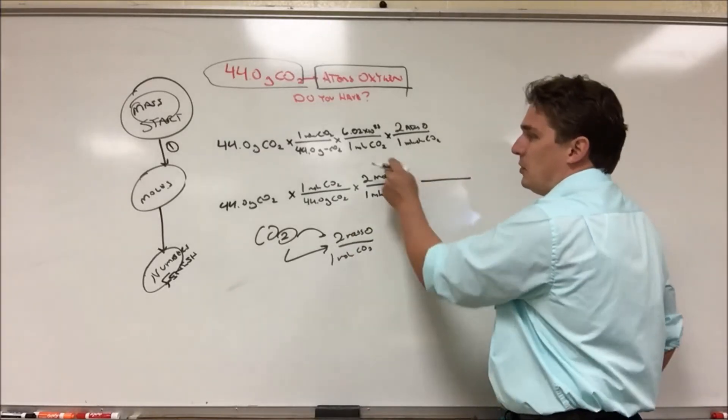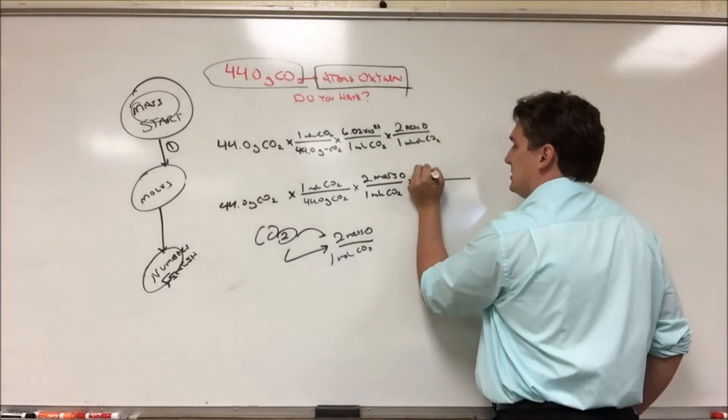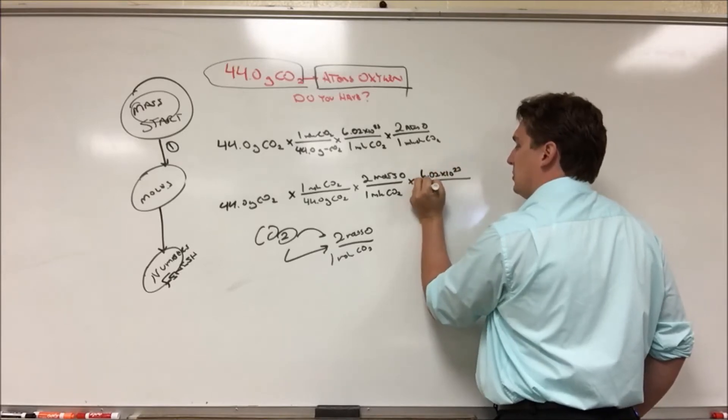Next step, we're in moles of oxygen, we need to go to atoms of oxygen. We're going to multiply by 6.02 times 10 to the 23rd for every mole of oxygen.